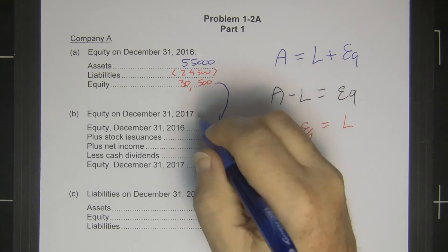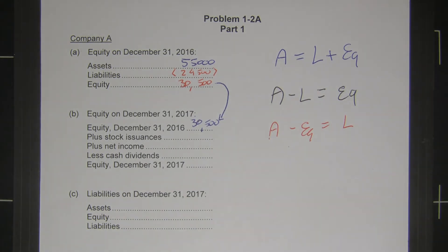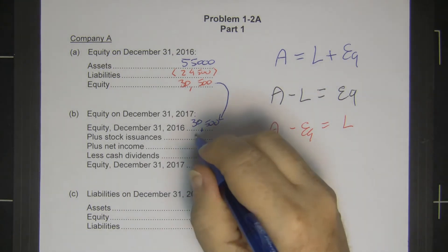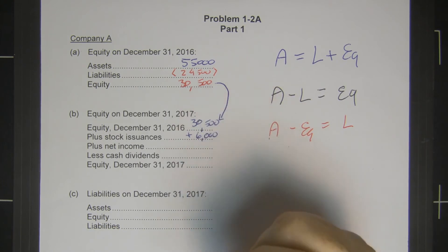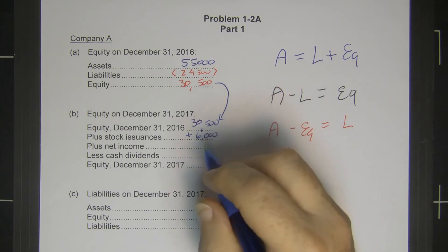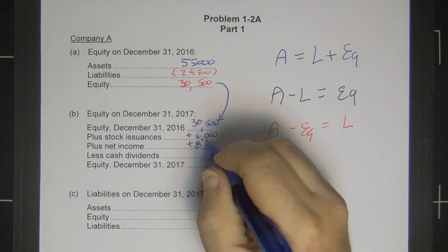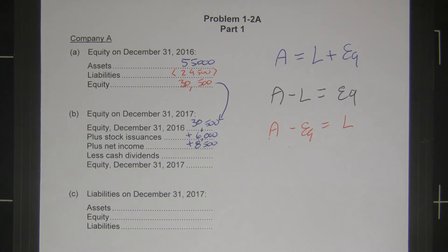During the year we issued $6,000 worth of stock, that's an addition. Plus the net income, remember, flows through to retained earnings, so that's an addition of $8,500. And we gave away cash dividends, and cash dividends come out of retained earnings.